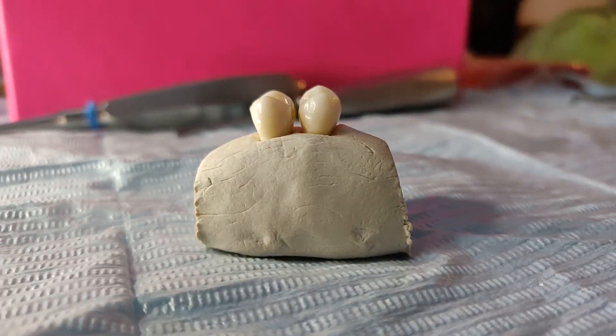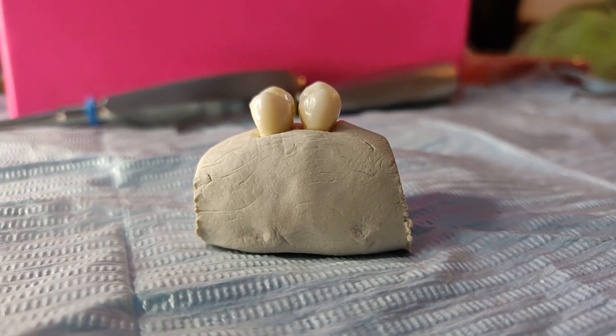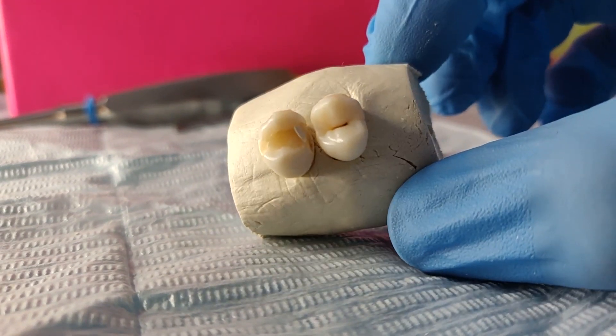Let's imagine that this white dough is the alveolar bone, which is the part of the jaw that holds the teeth. This is how the teeth look inside the alveolar bone.